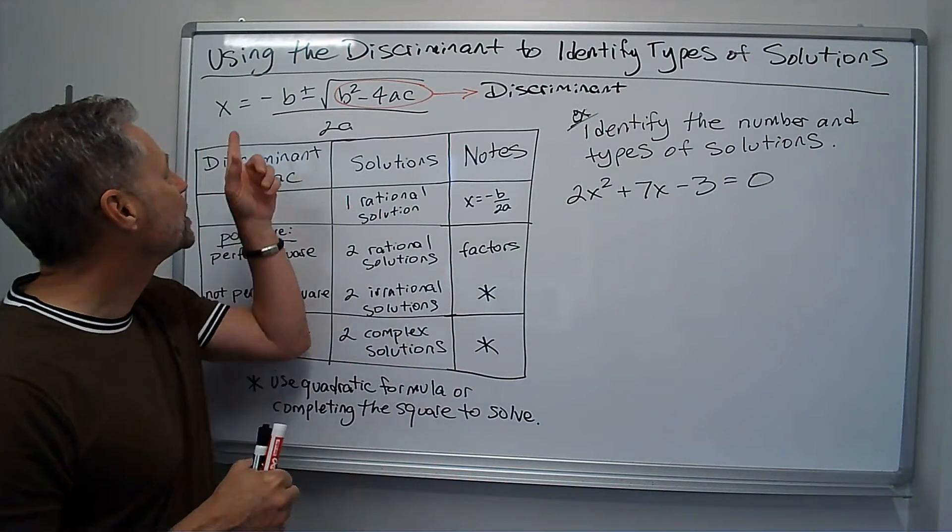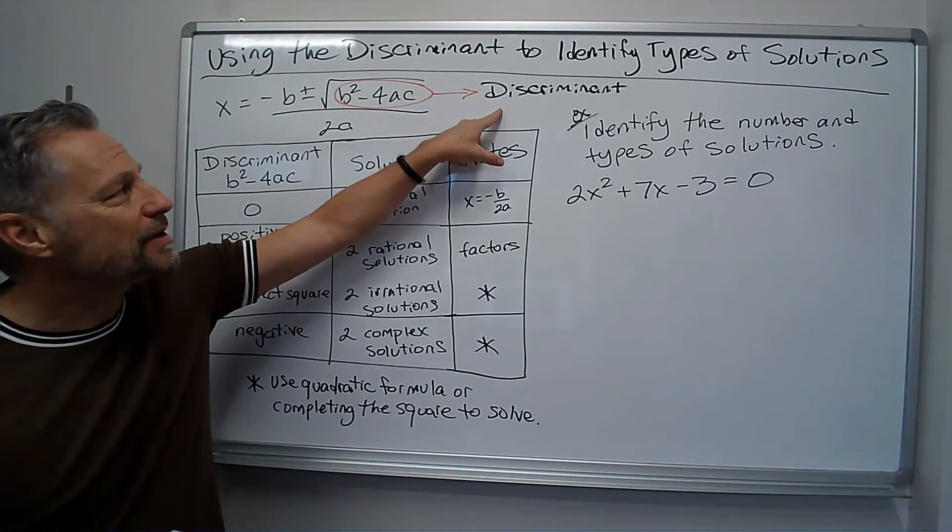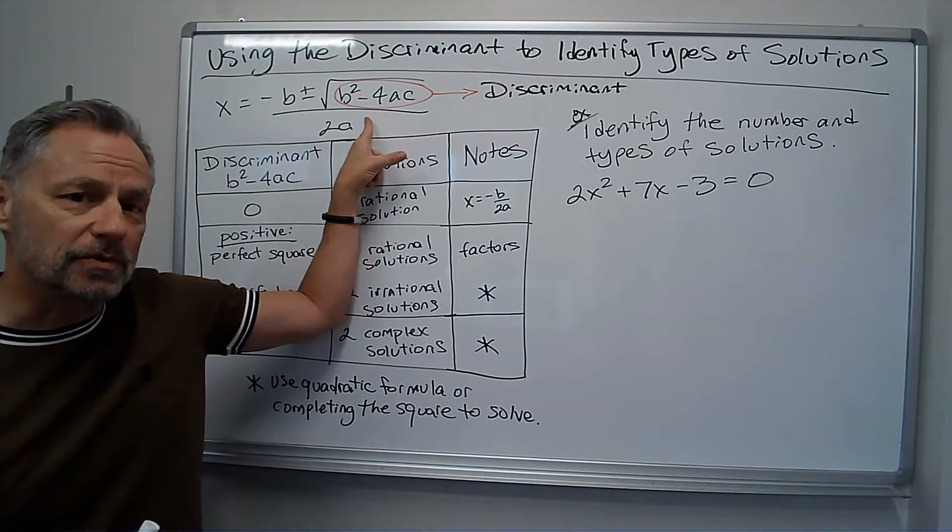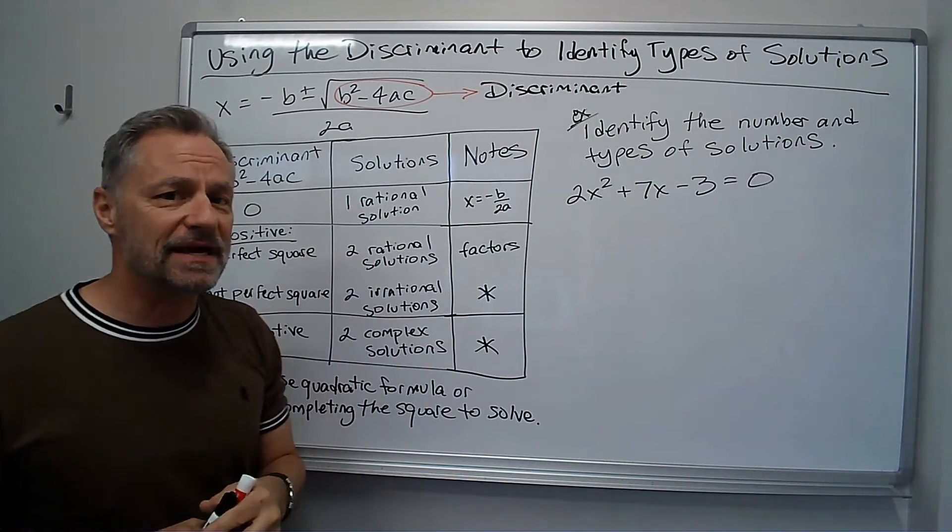So if you remember, the quadratic formula looks like this. The discriminant is the stuff under the square root, so it's the b² - 4ac. Let's think about what that tells us.